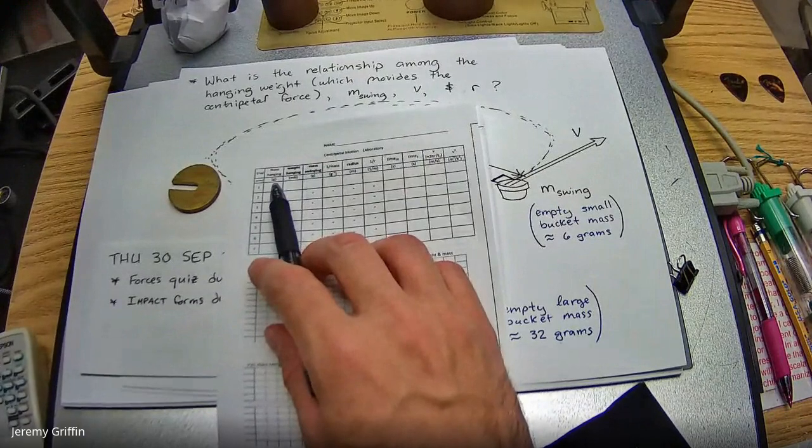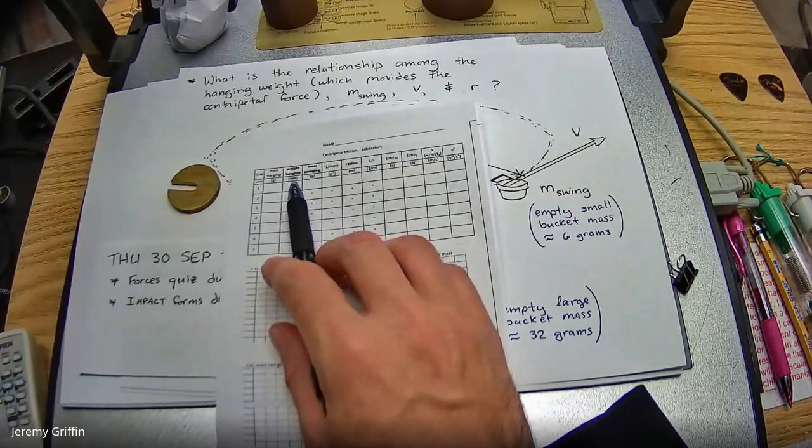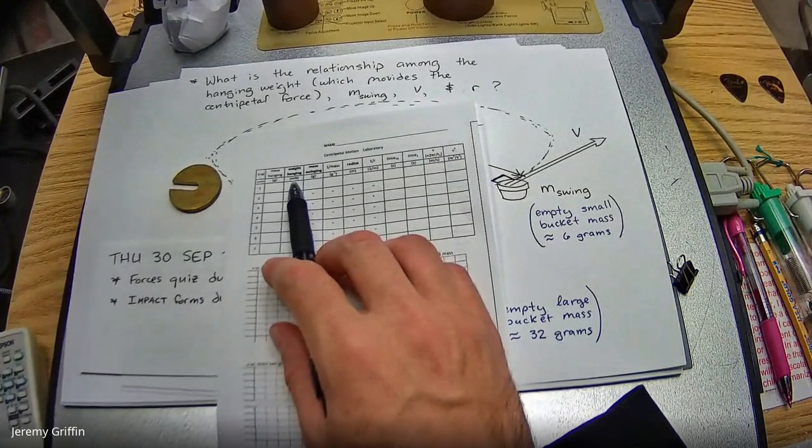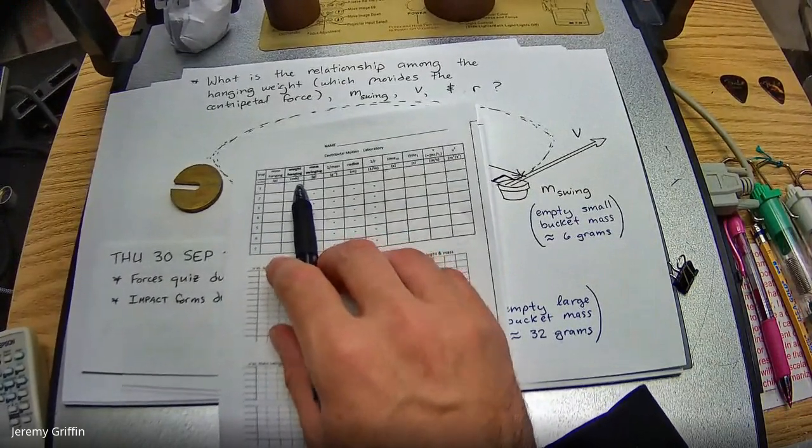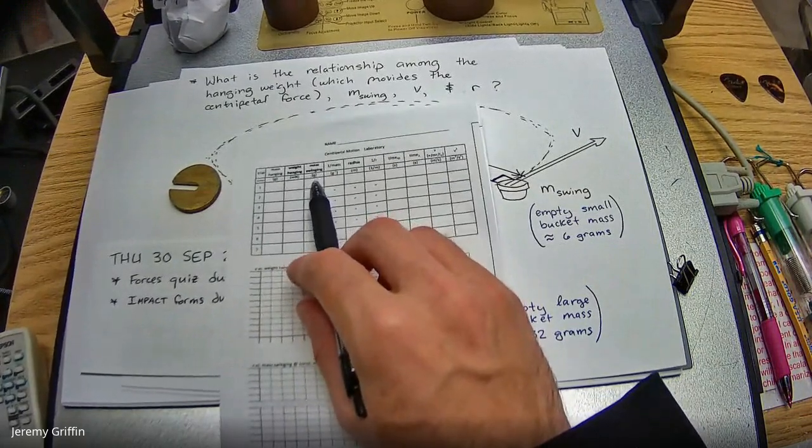Also, today use grams, but that's one one-thousandth of a kilogram, right? So when you multiply by 10 meters per second squared, you actually get the weight that's in millinewtons. That's good, just as long as you know that.